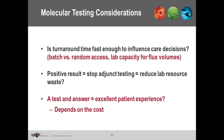Other practical considerations: Will the turnaround time be fast enough to influence care decisions? Does the test require batching that slows turnaround time versus random access? Does the lab have enough instruments to handle clusters of diarrhea? Is the lab centralized, causing transport delays? If a positive result stops adjunct testing from being ordered, that could reduce unnecessary downstream testing — but this needs to be modeled in your laboratory. There's also increasing focus on patient experience, where running a test and giving an answer equates to an excellent physician office visit.